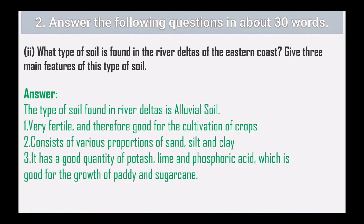What type of soil is found in the river deltas of the eastern coast? Give three main features of this type of soil. The soil found in river deltas is alluvial soil. It is very fertile and good for cultivation. It consists of various proportions of sand, silt, and clay, and has a good quantity of potash, lime, and phosphoric acid, which is good for growth of paddy and sugarcane.